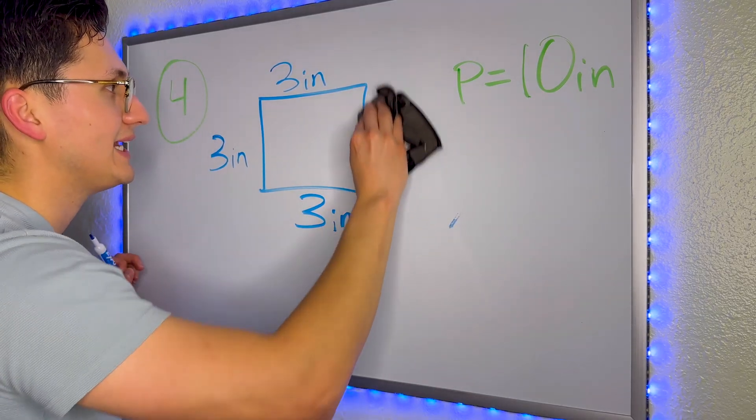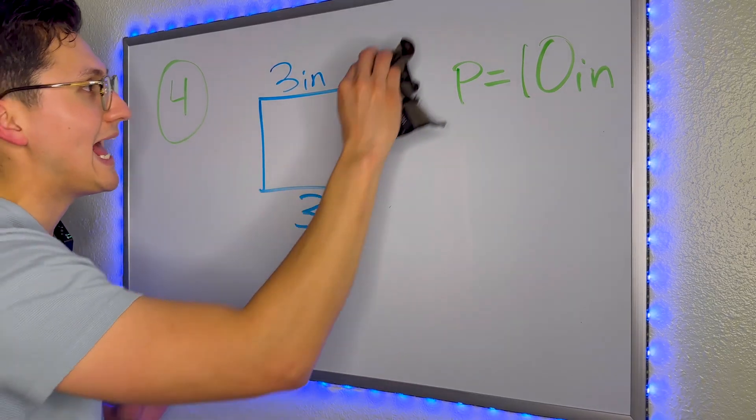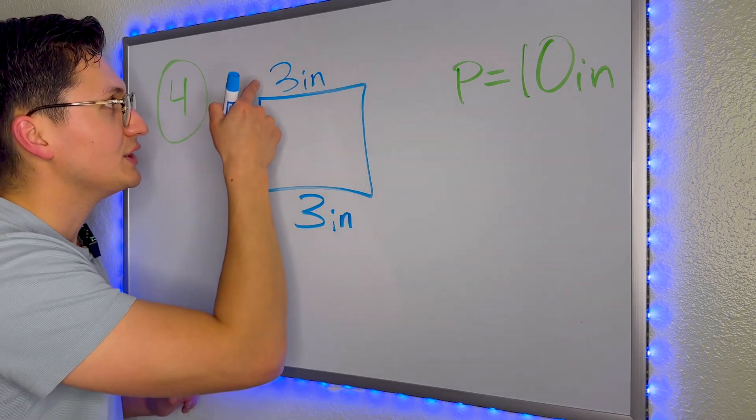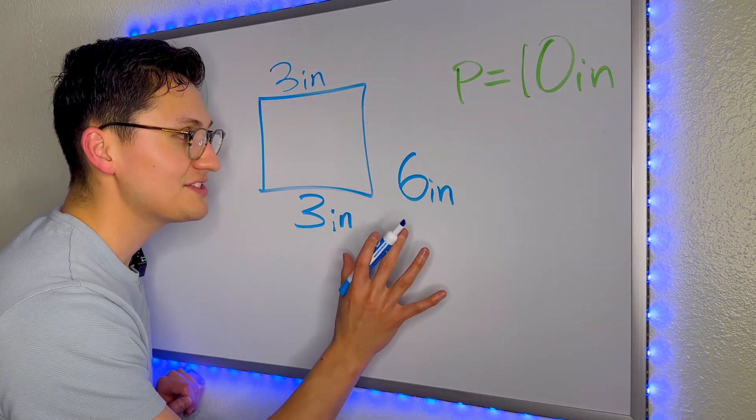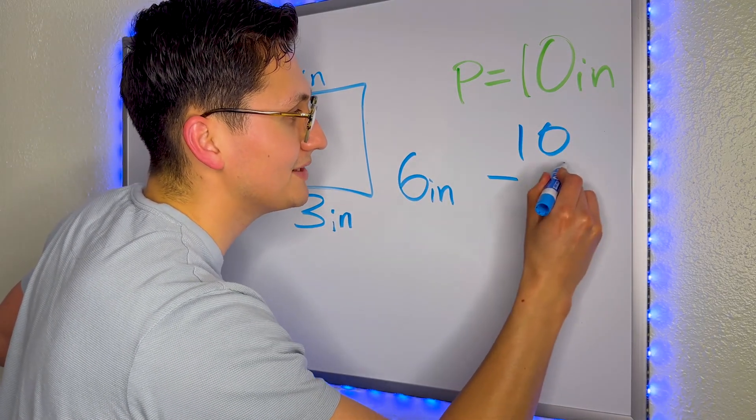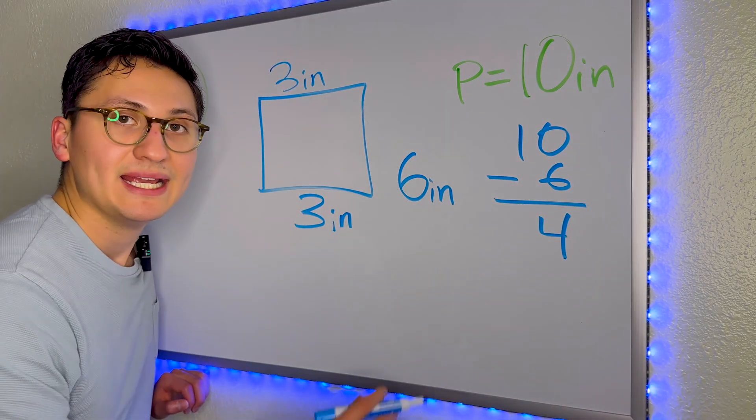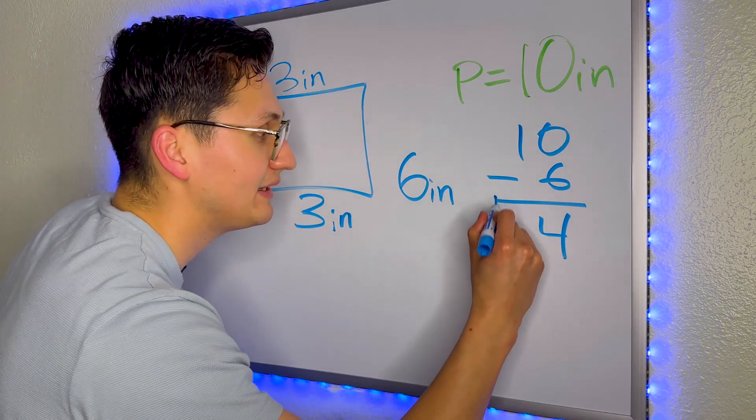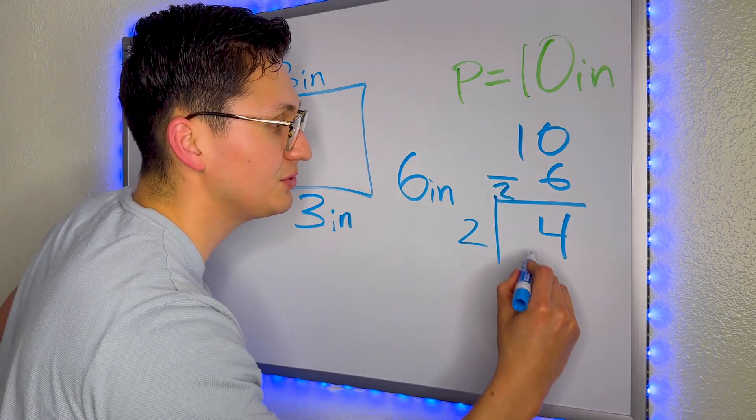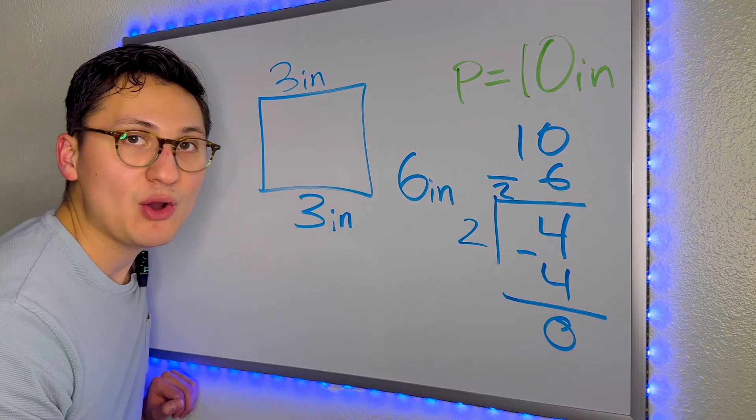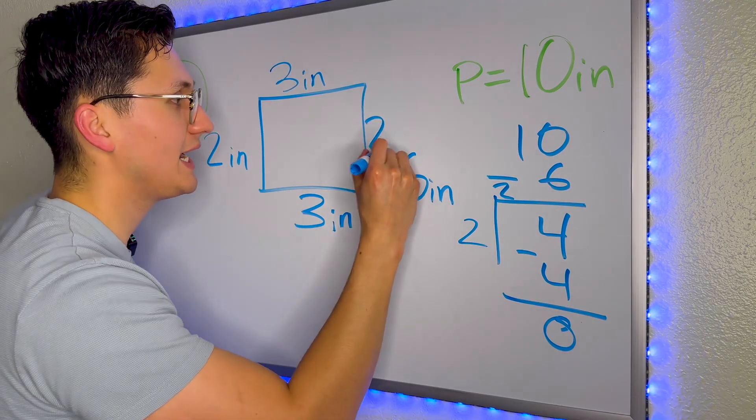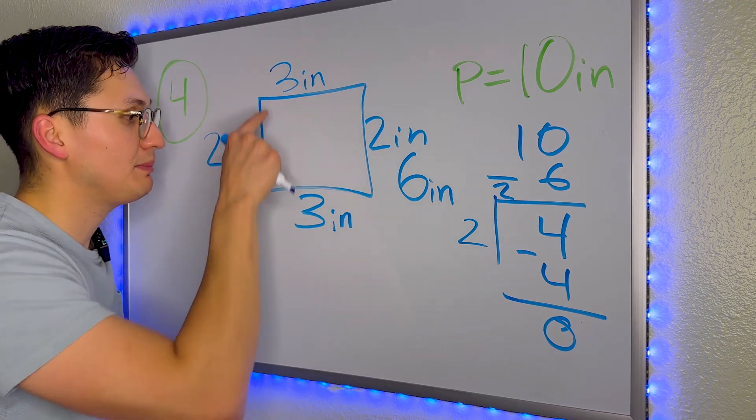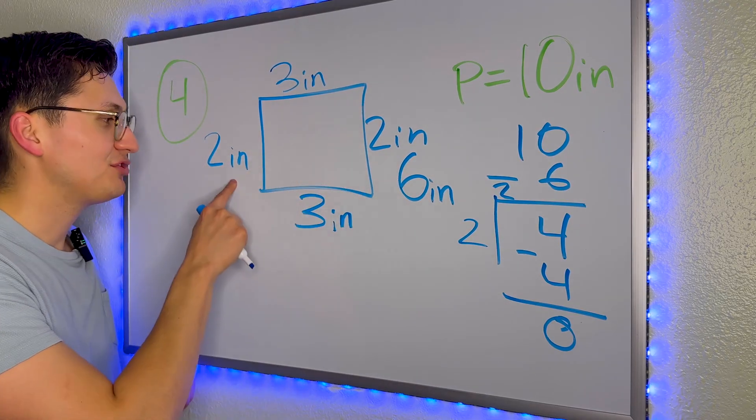So what we can do is the same thing as the other problem. We can add the lengths that we do have and subtract it from the total perimeter. For example, 3 plus 3 is 6. This 6 we subtract from the perimeter. So 10 minus 6 is 4. Now this 4 represents not one side, but both sides. So we must divide. 2 times 2 is 4. We subtract. And now we know that these sides are actually 2 inches. And we can test it out by adding 3 plus 3 is 6 plus 2 is 8 plus 2 is 10.